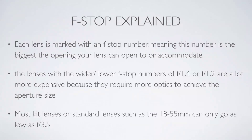Each lens you buy is marked with an f-stop number indicating the widest opening that lens can accommodate. The lower that number, the better the lens — the more it can actually do. A 50mm f1.2 L-series Canon lens, for example, has a lot more optics built into it to achieve that wide aperture, and that's why those lenses are so expensive.